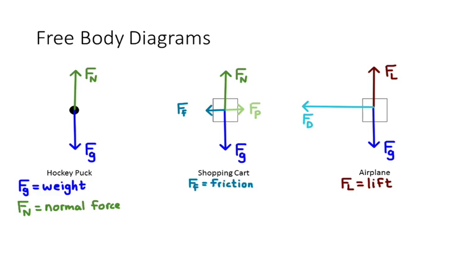That means there's got to be something pushing it forward, and we would refer to that as the thrust of the engines. So if it's moving at a constant velocity, then those two forces would have to balance each other, and so we would draw them the same size.